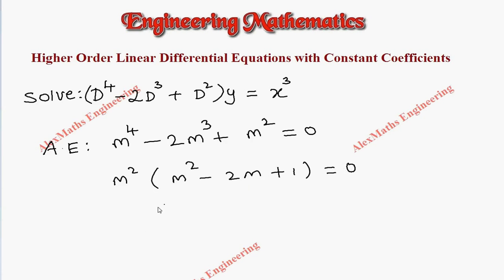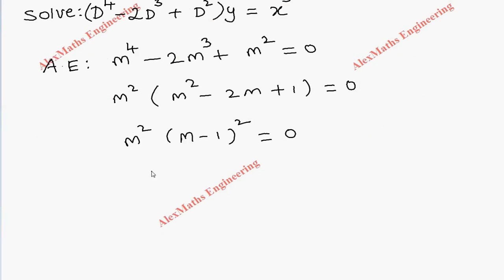This factors as m²(m - 1)² = 0. Equating individually both factors to zero, we get m² = 0, meaning m = 0, 0 (two values), and m - 1 = 0 giving m = 1, 1. So we get four values, and two pairs are repeated or equal values.